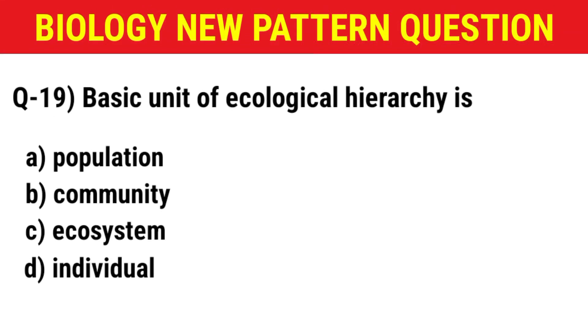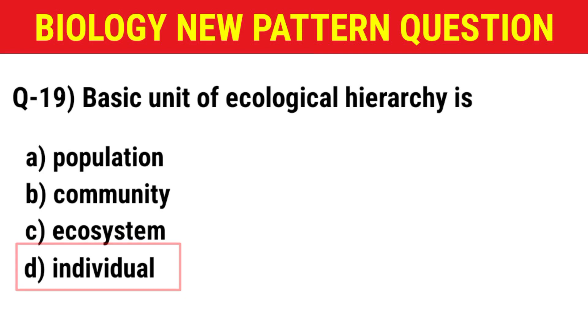Next question: The basic unit of ecological hierarchy is — (A) population, (B) community, (C) ecosystem, (D) individual. The correct answer is option D: individual.